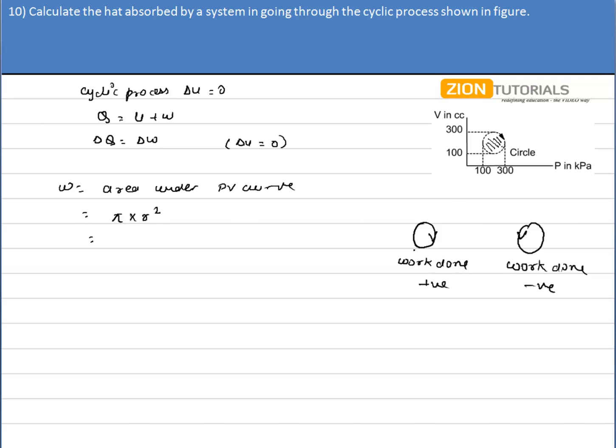So radius will be this much distance, and it can be calculated as pi into (300 minus 100) by 2, that is into 10 to the power 3 because it is kilopascal, into (300 minus 100) by 2, into 10 to the power minus 6 because it is in cc.